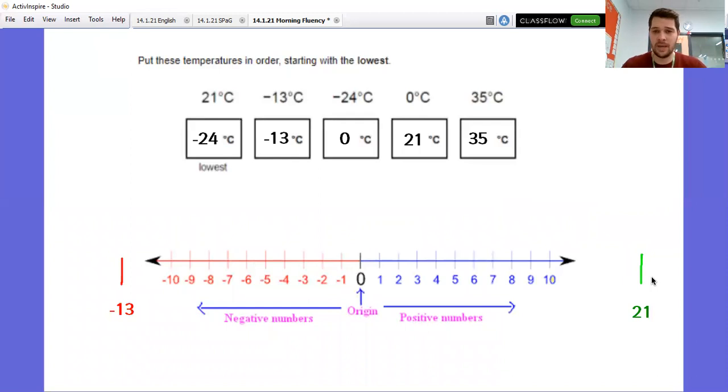Then, very similar, but now with positive numbers, 21 degrees would be somewhere over here and past that 35 degrees. So my lowest temperature is negative 24 and my hottest temperature is 35.